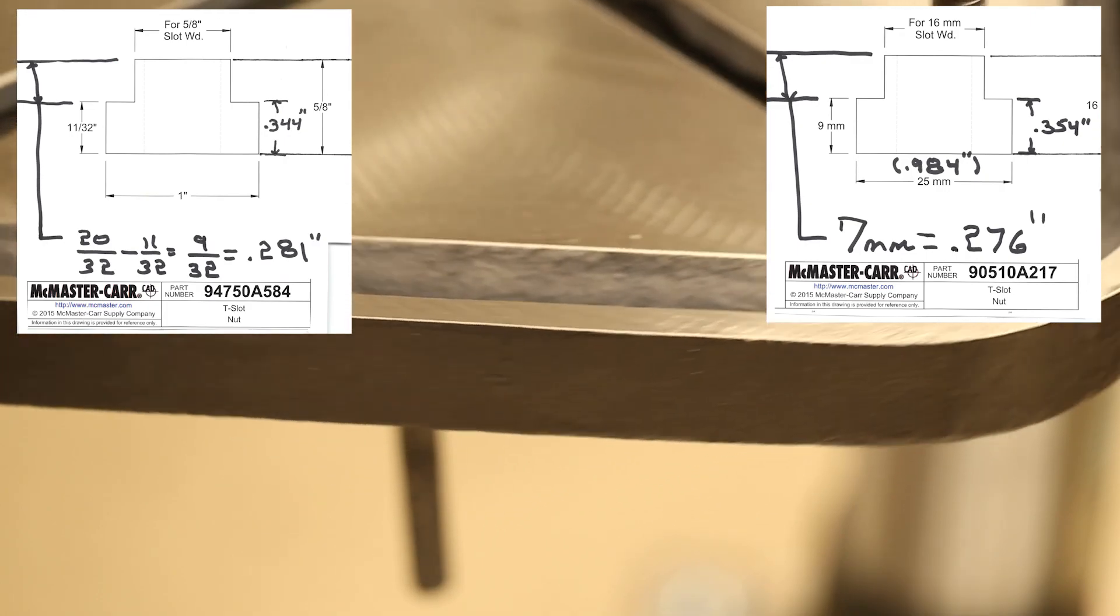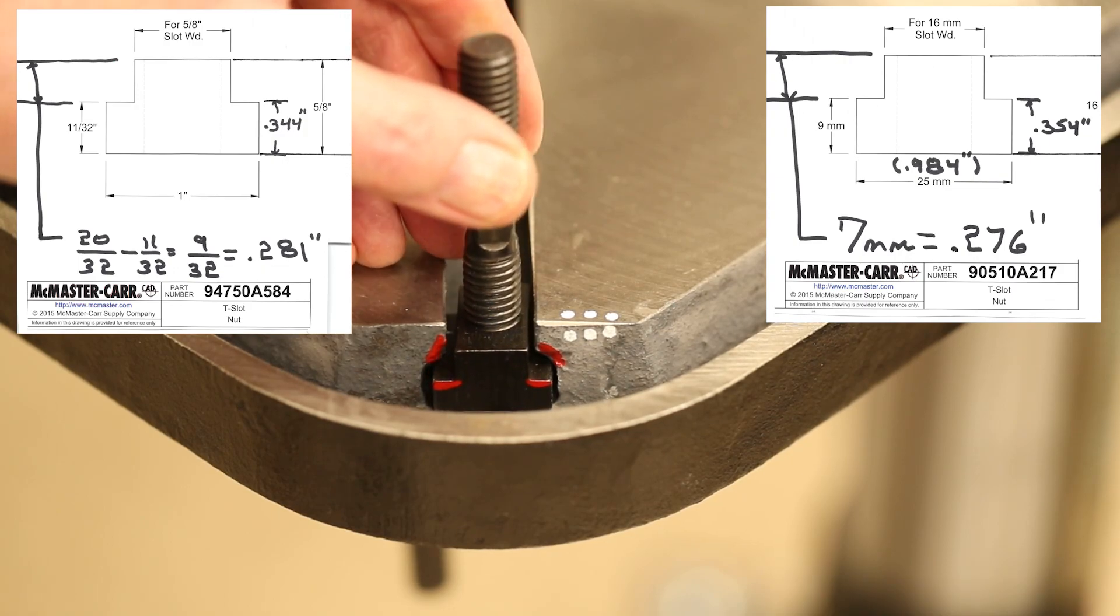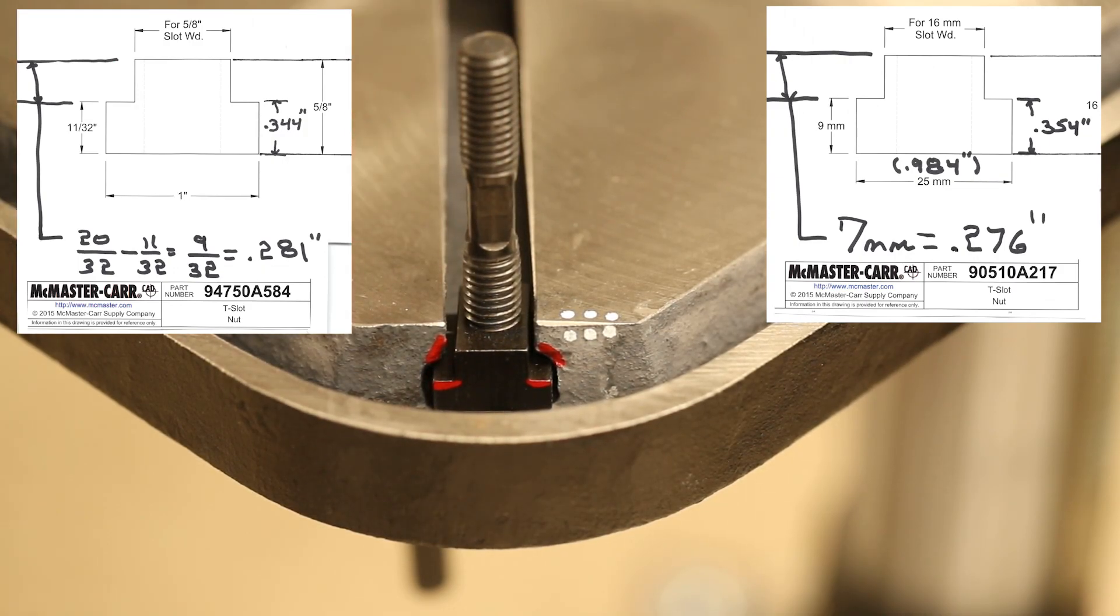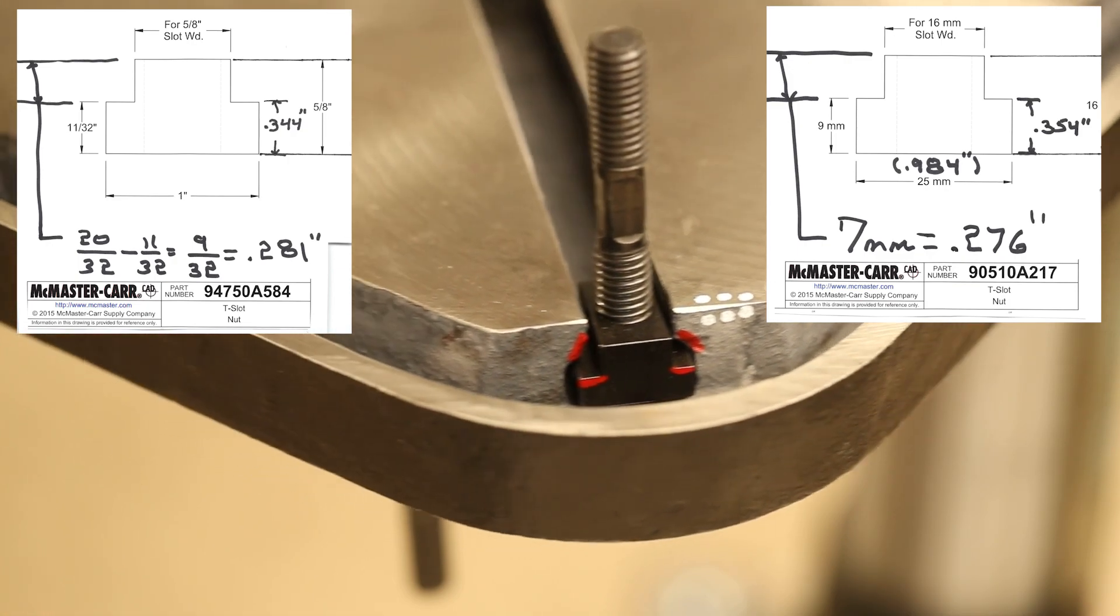Moving on to the third one, we again have a similar problem. All nuts well-defined shape, the table not a very good shape. And then the fourth one, same problem.